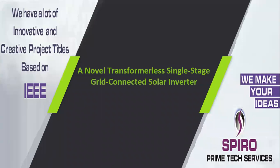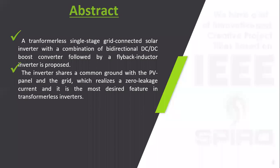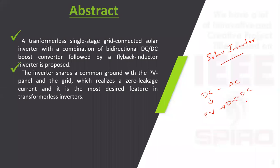Project code ITPW04: ITIL transformer-less single-stage grid-connected solar inverter. In a conventional solar inverter, DC to AC conversion occurs where the solar panel output goes through DC to DC conversion and then DC to AC conversion — this is the conventional solar inverter process.